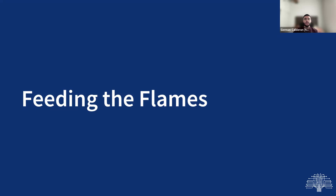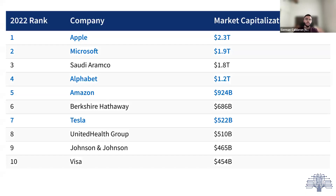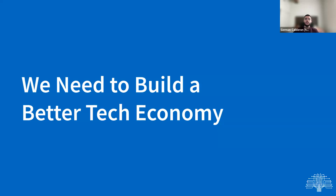The tech industry's position as arguably the most powerful sector of American business requires that it take some responsibility for how the economy is growing. Tech should employ business practices and create products that directly impact the economic health of our communities. Looking at top companies today — Apple, Microsoft, Google, Amazon — tech owns a lot of the market share. While tech didn't create social and economic inequity in the US, it has worsened some of those inequities and has a responsibility to help fix it.